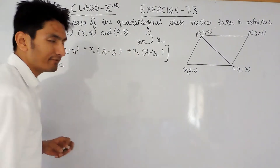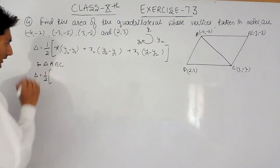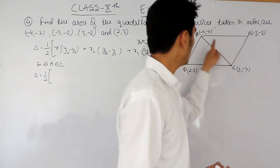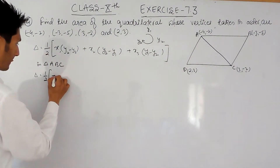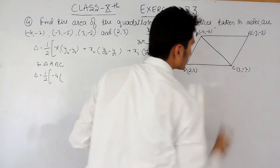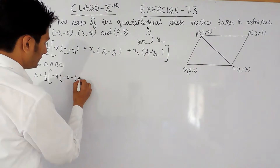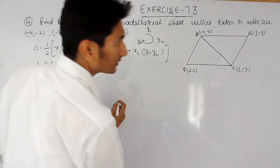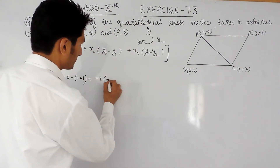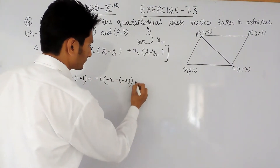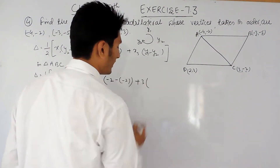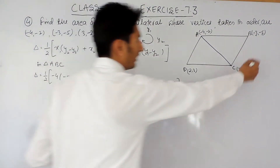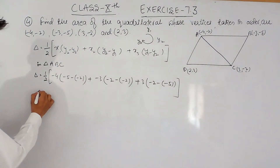Now I have to find the area of triangle ABC. Area equals half times: x1 is minus 4, multiplied by (y2 minus y3), which is minus 5 minus minus 2; plus x2 is minus 3, multiplied by (y3 minus y1), which is minus 2 minus minus 2; plus x3 is 3, multiplied by (y1 minus y2), which is minus 2 minus minus 5.